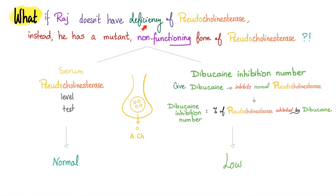So little Johnny had a deficiency of pseudocholinesterase. That's why we use the serum cholinesterase level test to measure it. What if now we have Raj? Raj does not have a deficiency of the pseudocholinesterase. However, he has a mutant, non-functioning form of pseudocholinesterase. So the level of this enzyme in his plasma is fine, but it is non-functioning. How can I tell? If I measure the serum pseudocholinesterase level, it's going to be normal. So how can I diagnose him early so that I do not give him succinylcholine, or I adjust the dose, or I give him something else altogether? You need another test called dibucaine inhibition number.